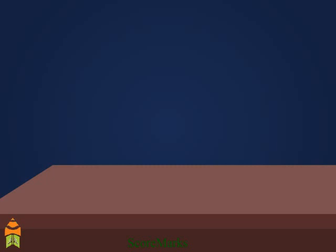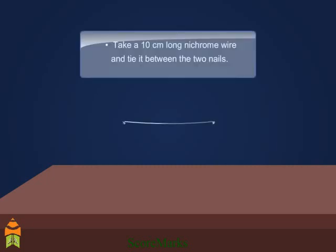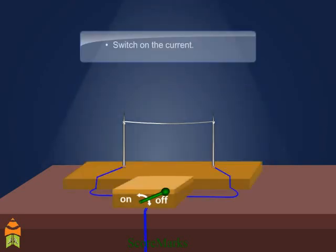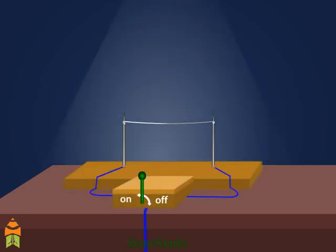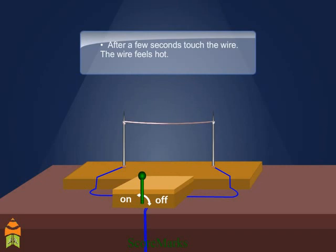Let's perform an activity to understand this phenomenon. Take a 10 cm long nichrome wire and tie it between two nails. Switch on the current. After a few seconds, touch the wire. The wire feels hot.